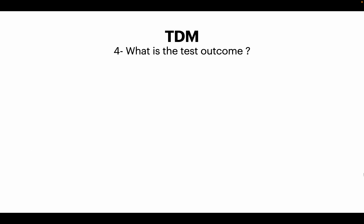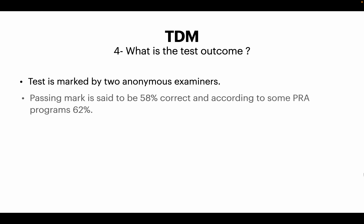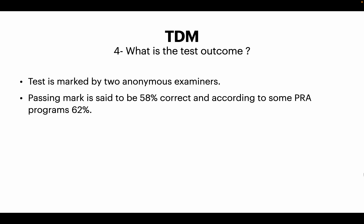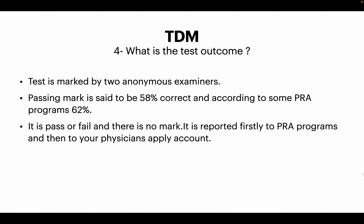What is the test outcome? The test is marked by two anonymous examiners, and there is a benchmark for passing. The passing mark is said to be 58%, with some PRA programs citing around 62%. It is a pass or fail exam with no numerical mark provided. Results are reported first to the PRA programs before the applicant is informed, and then communicated to the applicant and later provided through their PhysicianApply account.